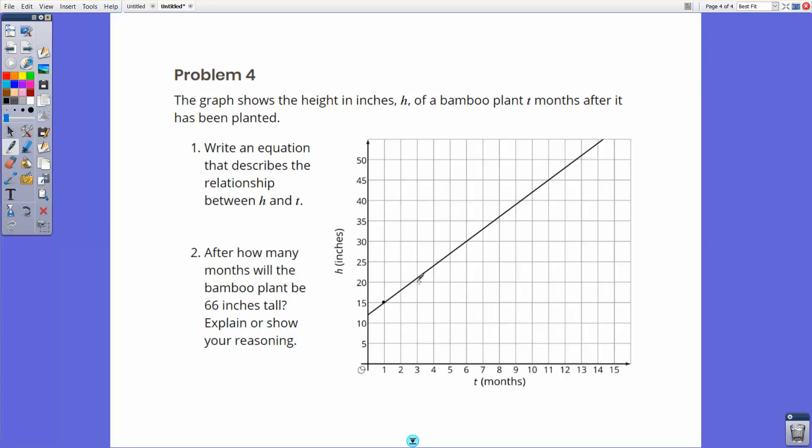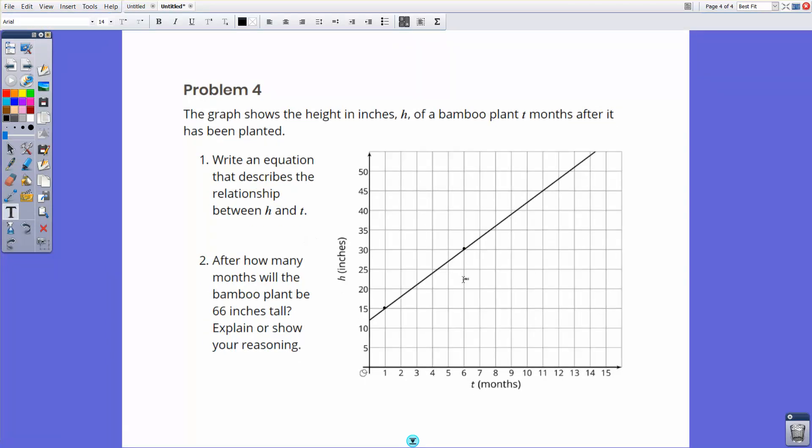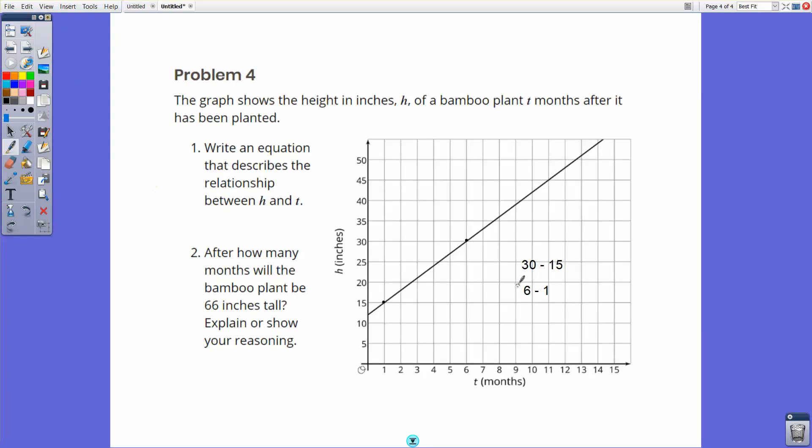So if I start here at one comma 15, that's a point I can use. And then if I find another point, here's another point right here. That's a good one. That's six comma 30. So if I use my slope formula here, that's going to be 30 minus 15 on the top, and that will be over six minus one. So that's my slope formula for that. So let me just draw my bar here. I'm using a touch pad today, so it's not as good for the mouse. So that's going to be 30 minus 15 over six minus one. That's 15 over five, which means that the slope of this is three. So that equals three for the slope here.